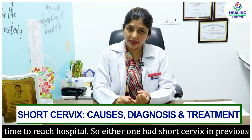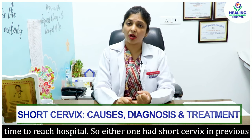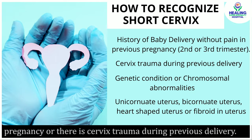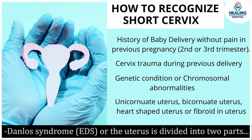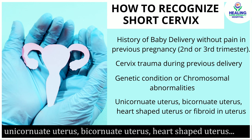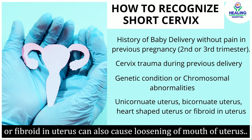Jaise mein ne bataya — pichli pregnancy mein cervical incompetence ki history ho, ya pichli delivery ke dauran cervix pe trauma hua ho, kuch genetic conditions ya chromosomal abnormalities, Ehlers-Danlos syndrome, ya aapki uterus ka kuch aisa shape ho — uterus do bhaagon mein divided ho, unicornuate uterus ho, bicornuate uterus ho, heart shaped uterus ho, ya phir uterus mein koi fibroid ho — tab bhi ye chances rehte hai.